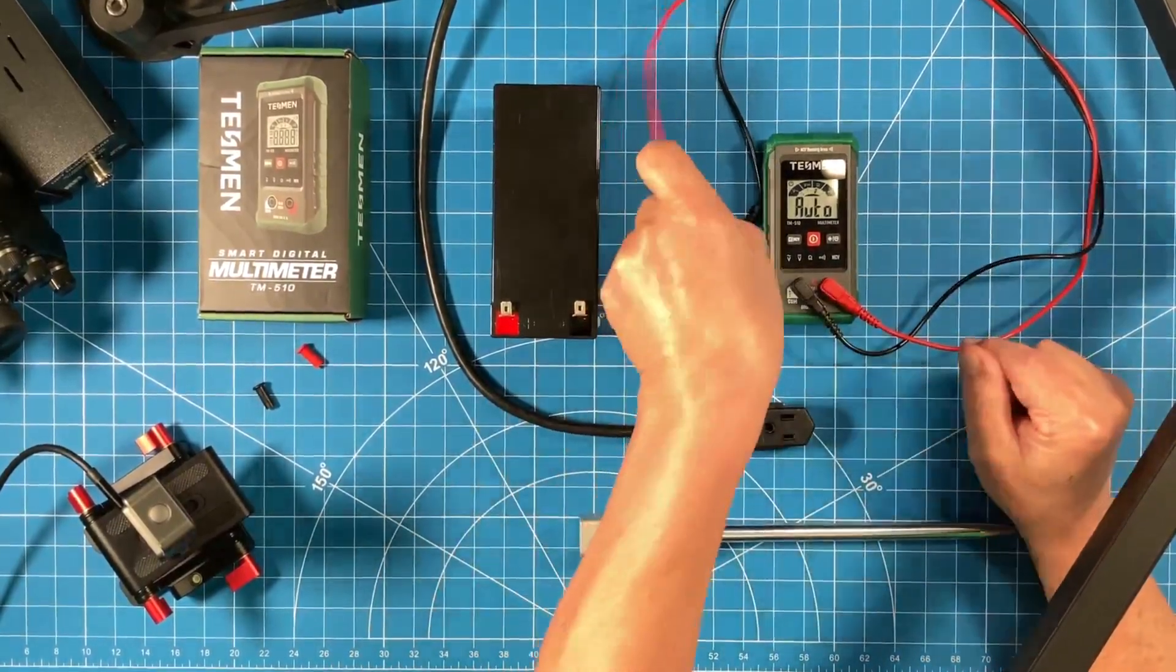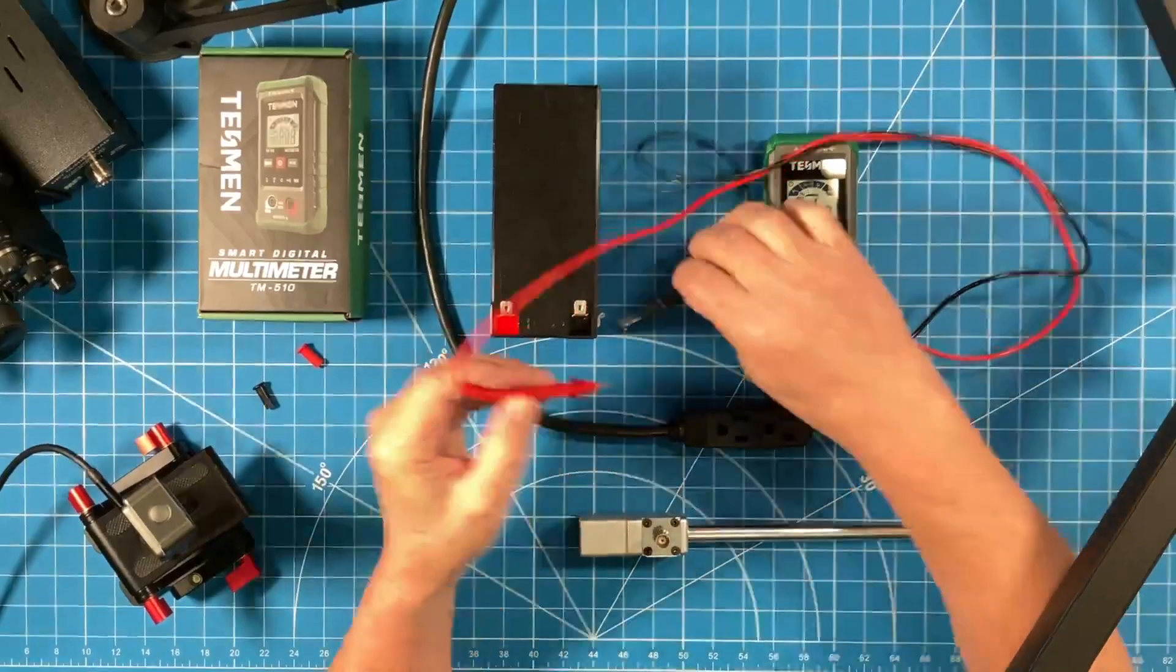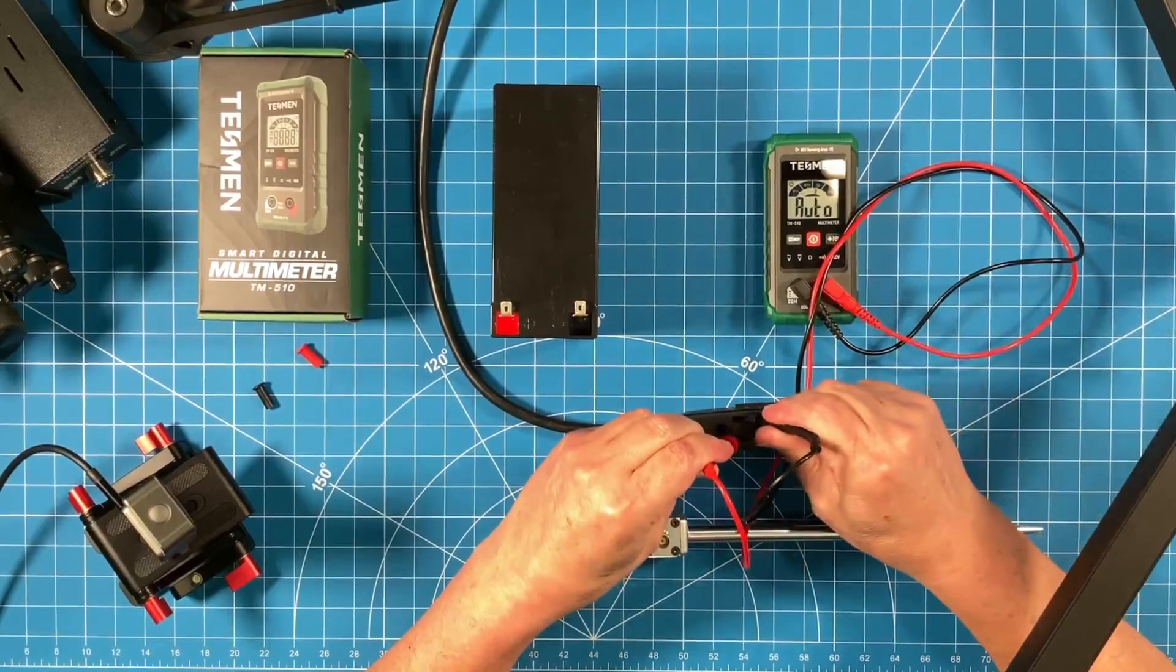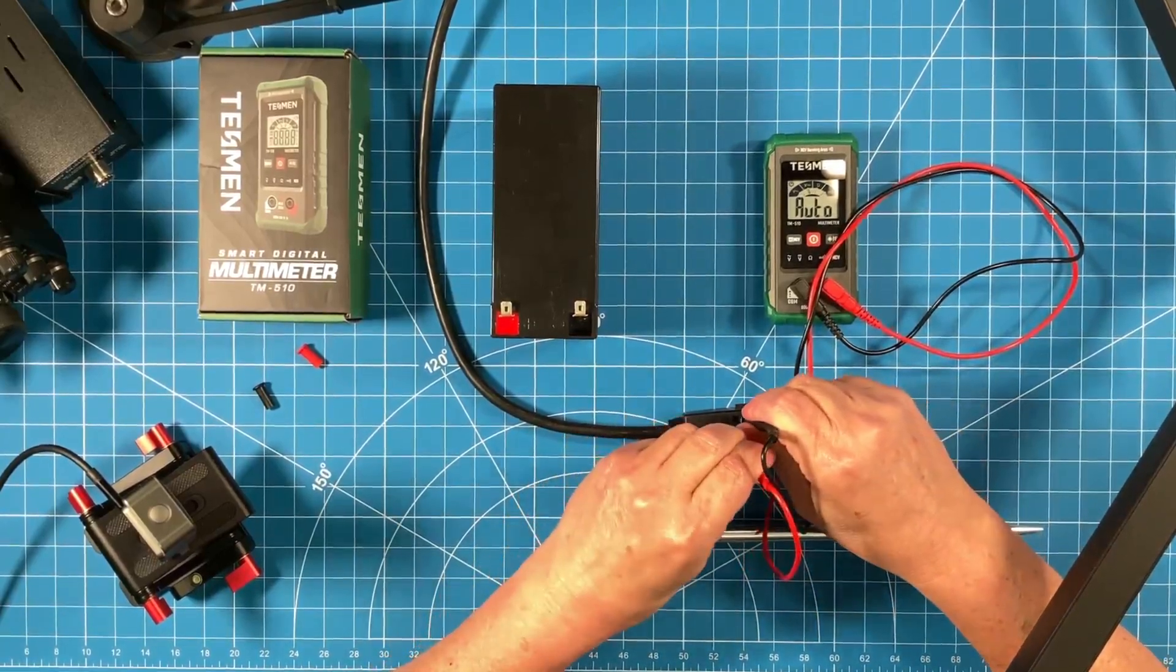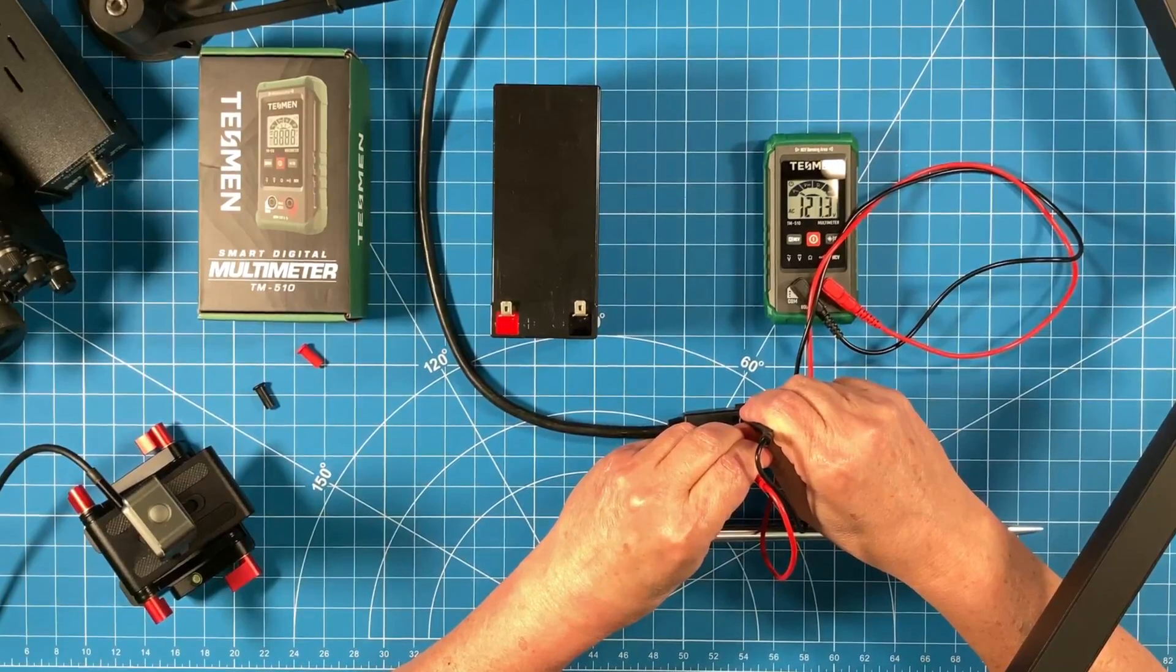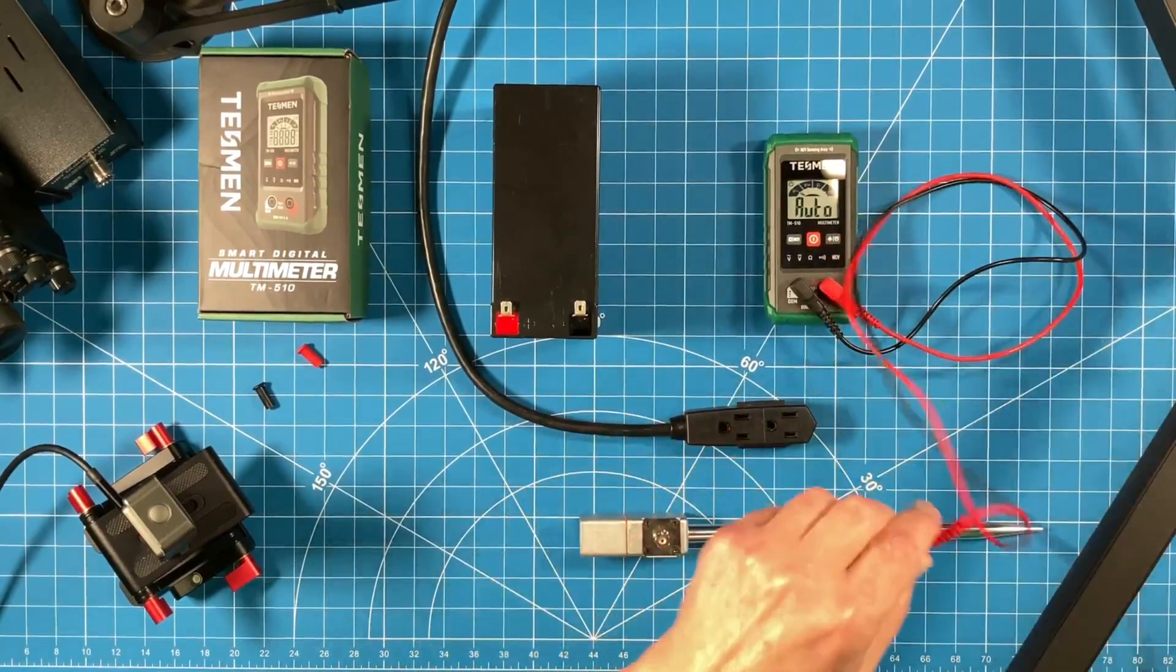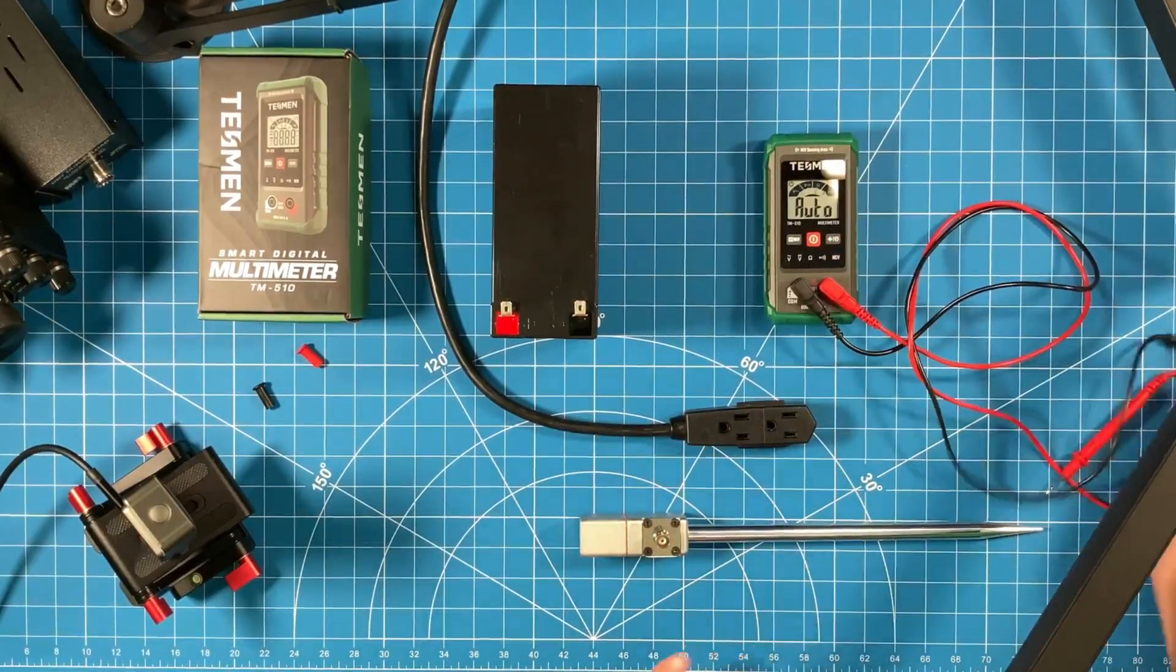We're dealing with 120 volts here so don't mess around folks. This is electricity, always safety first. And let's just see if we get what we expect to see in the multimeter. 120.7, 121. Yep, that's what we expect to see. I've confirmed all this prior with my more expensive multimeter.